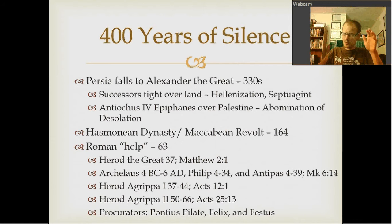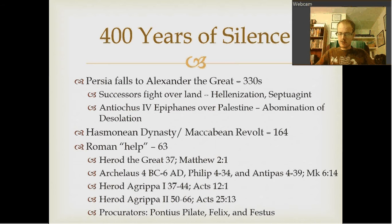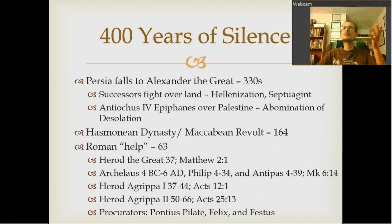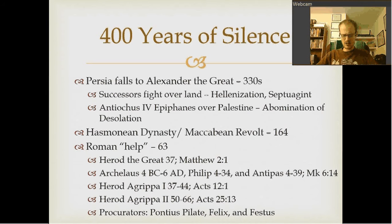Matthew 2:1 says: 'Now after Jesus was born in Bethlehem of Judea in the days of Herod the king, Magi from the east arrived in Jerusalem.' He's the one who kills all those babies. He had his wife killed — suspecting a plot against him. He was just really psychotic, a very crazy man.